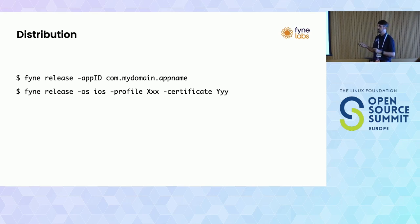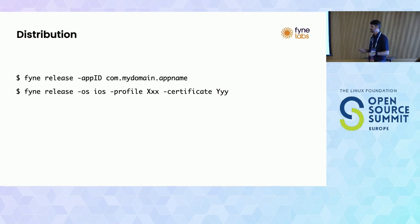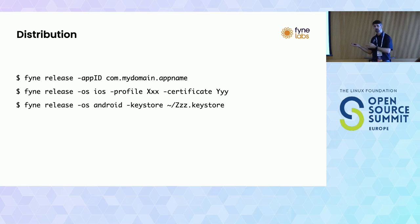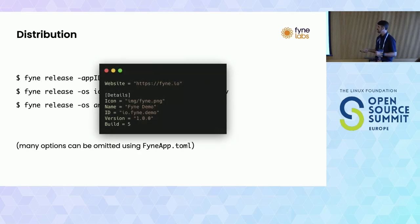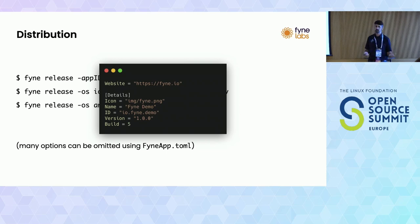On iOS you pass the Apple certificate and distribution profile. On Android, you provide where your keystore password was stored. Since these arguments can be repetitive, we added a TOML file format called fyne-app. You can store these in your repository and they become optional parameters that you can override or omit completely. Your build number will also be auto-incremented by the tooling to help with the release process.